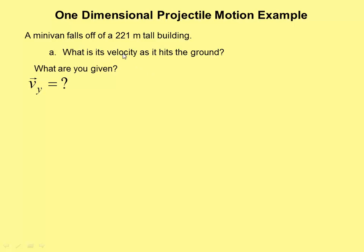But be careful here. What direction are you going to fall? Of course, you're going to fall down. So your vertical displacement is negative 221 meters, not positive 221 meters. That's a negative that a lot of people miss.